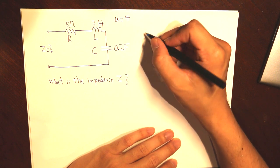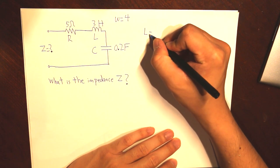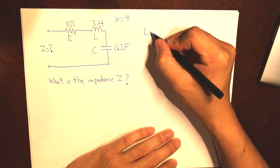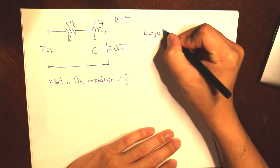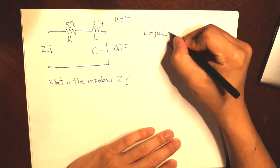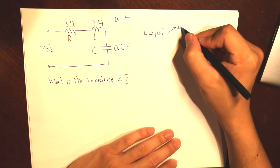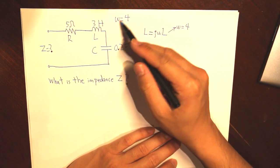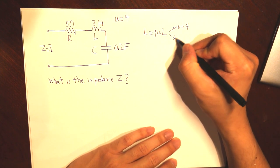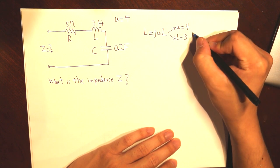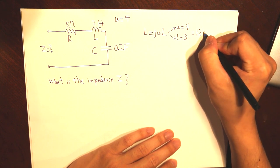So first for L, that is equal to JWL. W, or the angular frequency, is equal to 4, given here. L is equal to 3. So what we get is 12J.